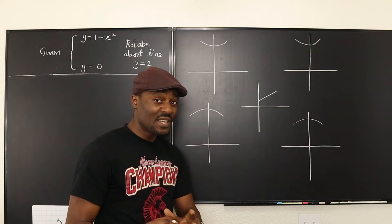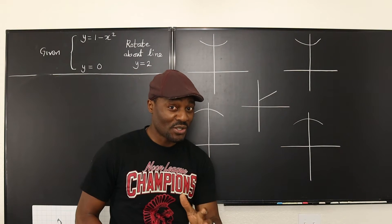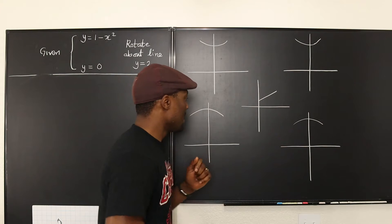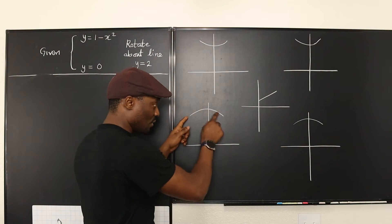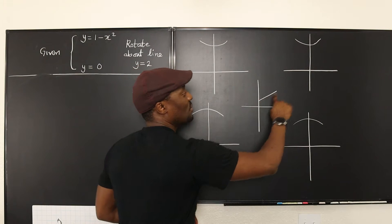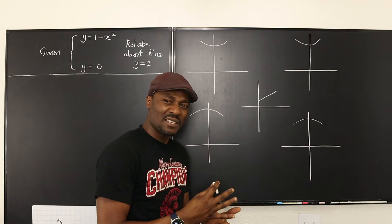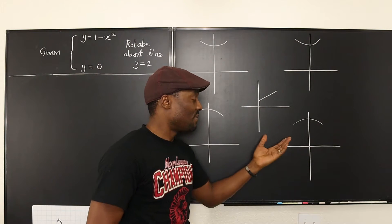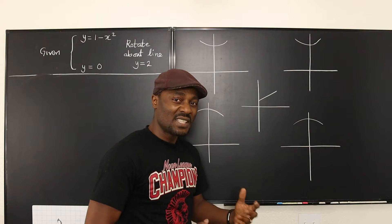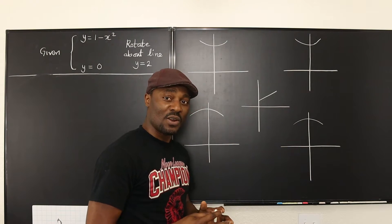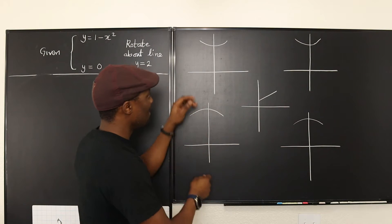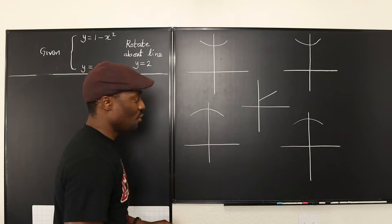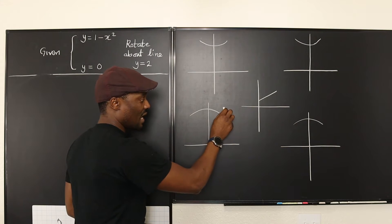The secret of knowing whether it's going to be a washer or a disk lies in why these functions don't continue going in their natural direction. These are continuous functions — they're supposed to keep going — but they've been truncated by other lines. The line that truncates a function has a role to play in deciding if you're going to get a washer or a disk. Let's take two examples of functions facing different directions.